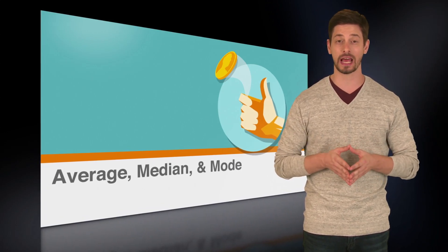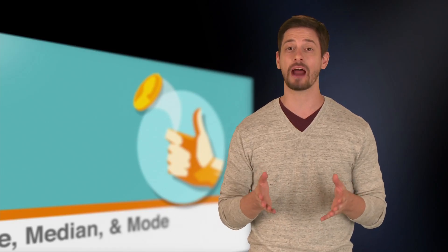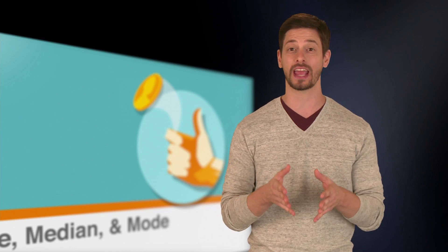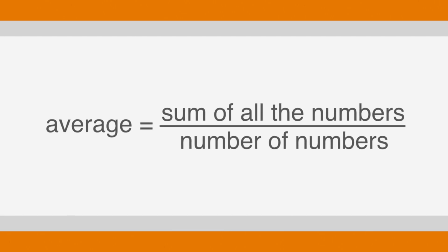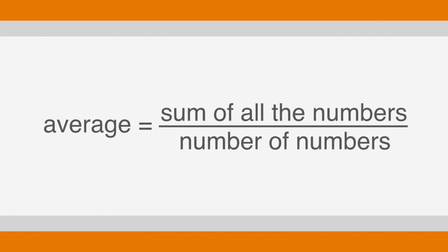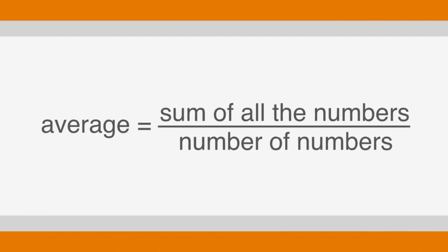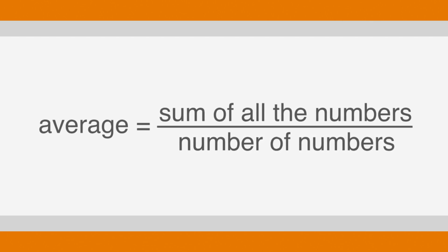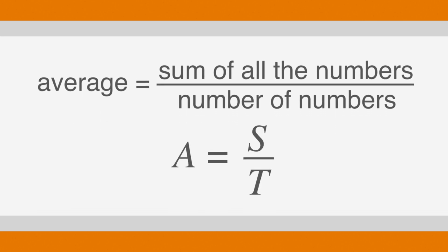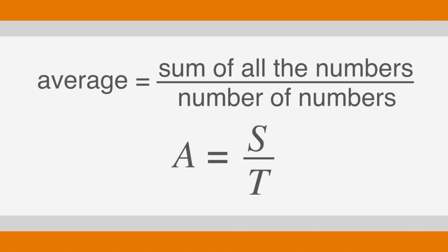We'll also cover median and mode questions in this lesson. Let's start by going over how the average or the arithmetic mean of a data set will play out on the ACT. We can find the average of any data set by dividing the sum of all the numbers given by the number of numbers in the data set. The shorthand formula is A for average equals S for sum over T for terms.